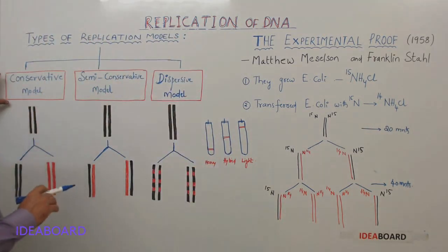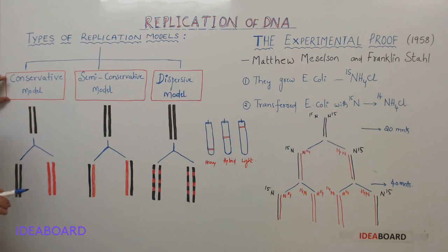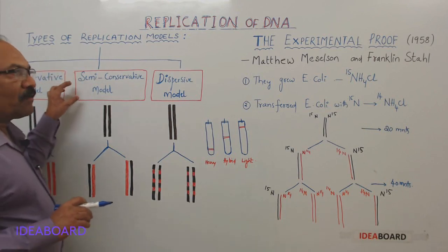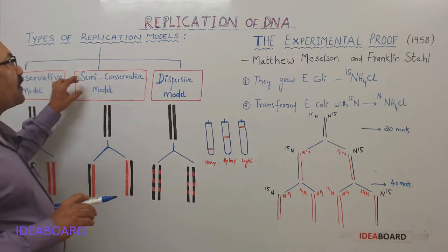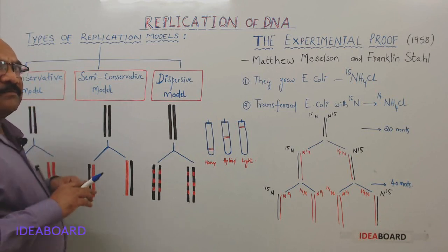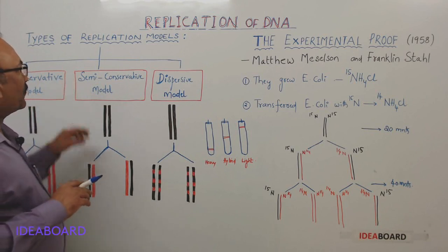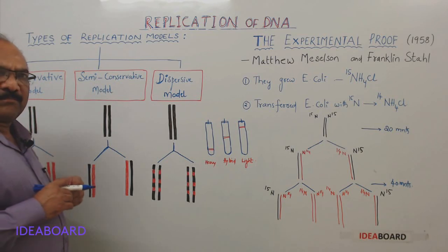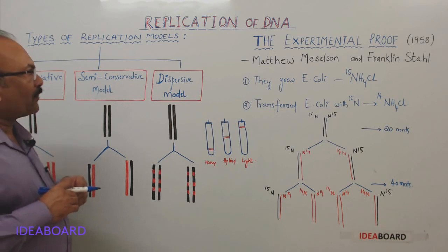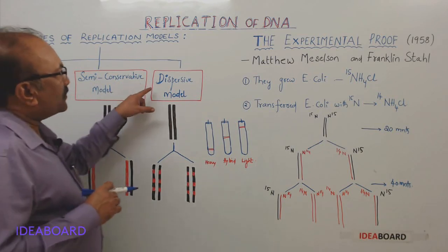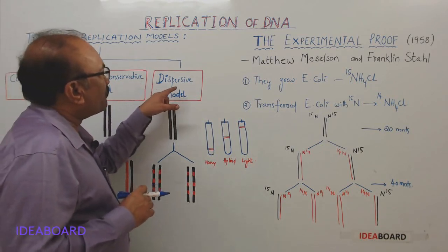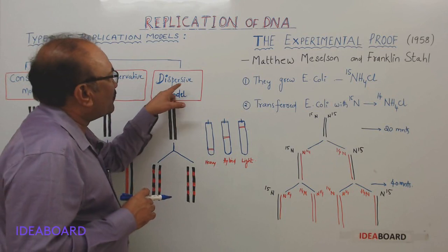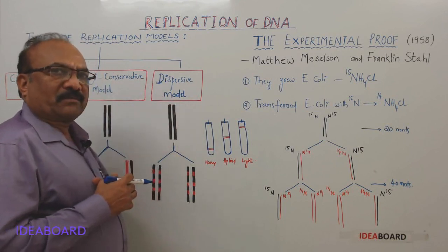Some believe that it is a conservative type. Watson and Crick proposed the semi-conservative type. And some people believe that it is a dispersive type of replication.